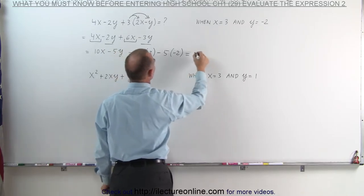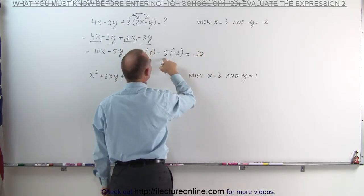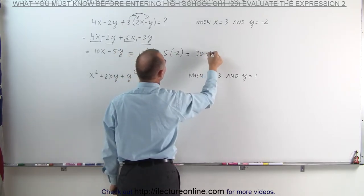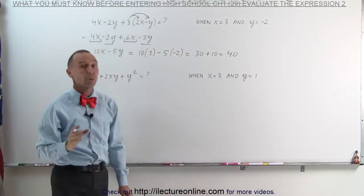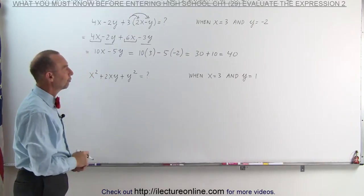This is equal to 10 times 3 which is 30 and minus 5 times minus 2 is plus 10 which means the expression evaluated when x equals 3 and y equals negative 2 is equal to 40.